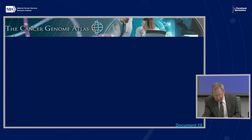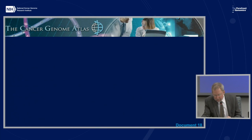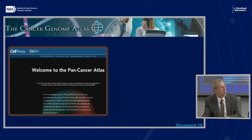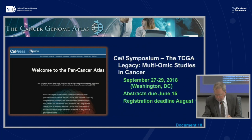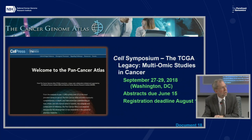The Cancer Genome Atlas, or TCGA, is a coordinated effort between NHGRI and NCI to better understand the molecular basis of cancer. This project completed data generation in 2016 and has two noteworthy capstone activities this year. First, the Pan Cancer Atlas was published last month as a collection of 27 papers across a suite of Cell journals, providing a unique, comprehensive understanding of how, where, and why tumors arise in humans. Second, there will be a three-day Cell symposium in Washington, D.C. in late September to discuss future research enabled by the TCGA legacy. Abstracts are due June 15th and the registration deadline is August 10th.